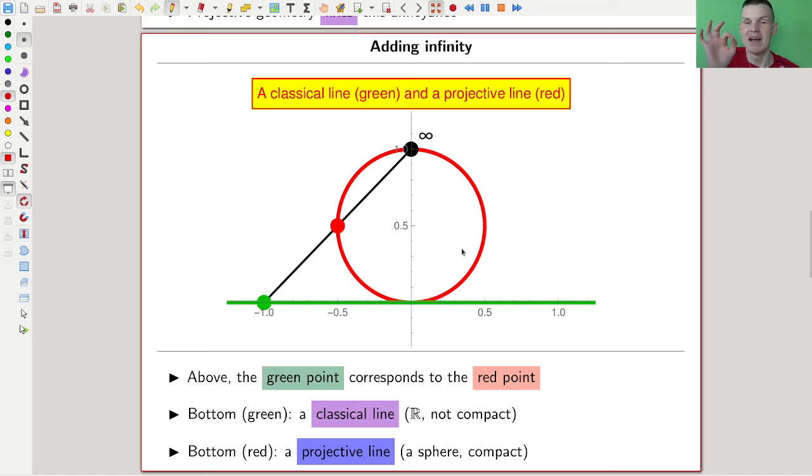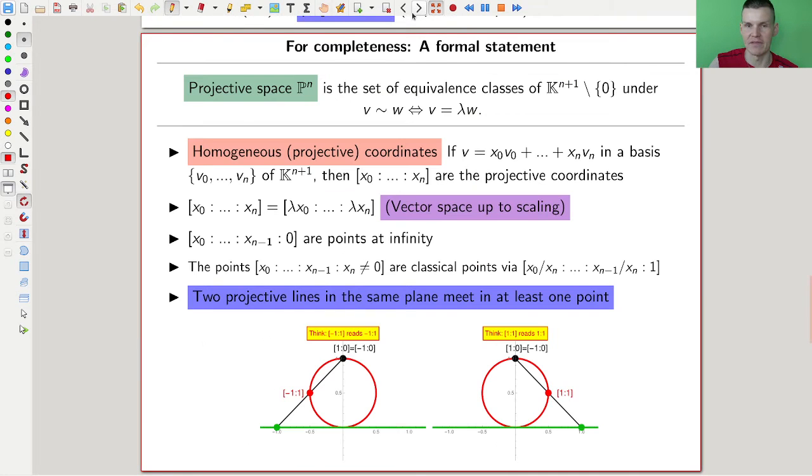So careful here, a projective line is actually a circle. So in particular, it is compact, which is the whole point about projective. And I'm not going to dwell on this for too much, but essentially what you do is projective space is the equivalence class of lines.